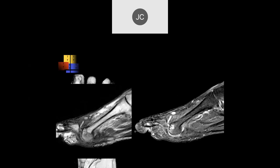The base of the proximal phalanx is dislocated — it should be down in this area. There's going to be marked stretching of the plantar plate as it goes up. You have to be very concerned about rupture and possible retraction of that flexor tendon. This was a complete traumatic disruption of the plantar plate with proximal retraction of the flexor tendon.